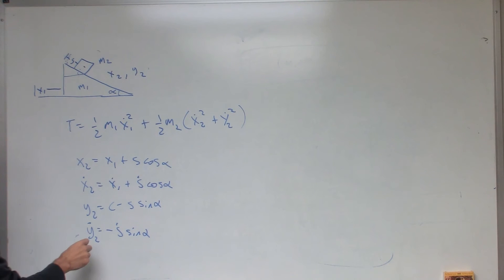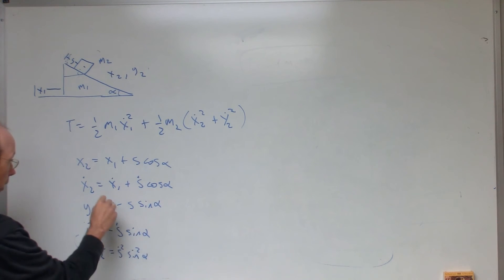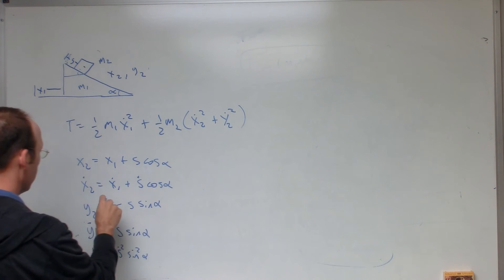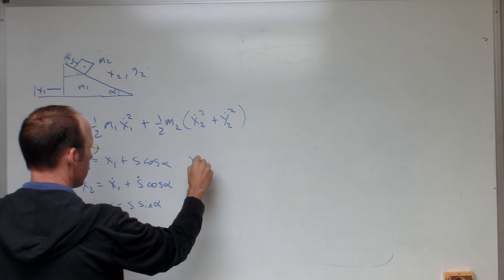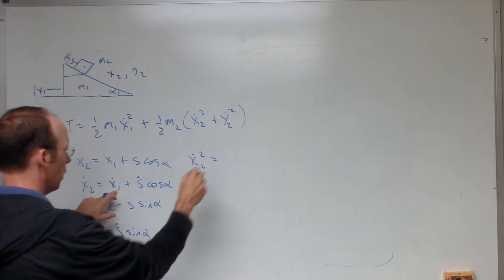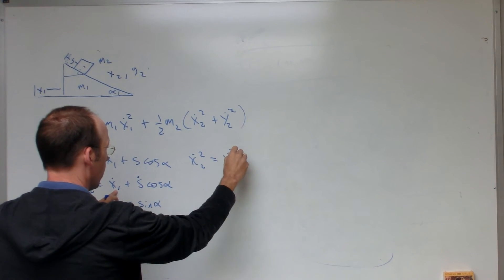So, then I square this. I need this y2 squared. y2 dot squared is going to be s dot squared, sine squared alpha. And then x2 dot squared, x2 dot squared, it's going to be x1 dot squared,